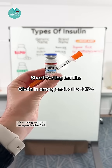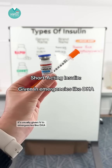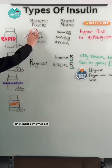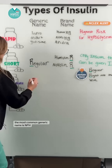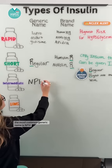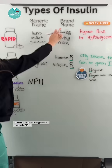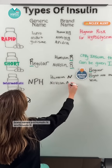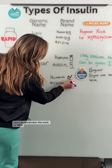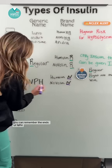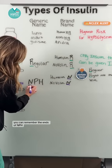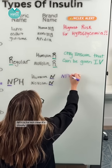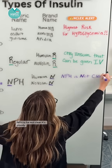It's usually given IV in emergencies like DKA. Next is intermediate. The most common generic name is NPH. Brand names are Humulin N and Novolin N. You can remember the N's of NPH and the memory trick: NPH is for 'not clear.'